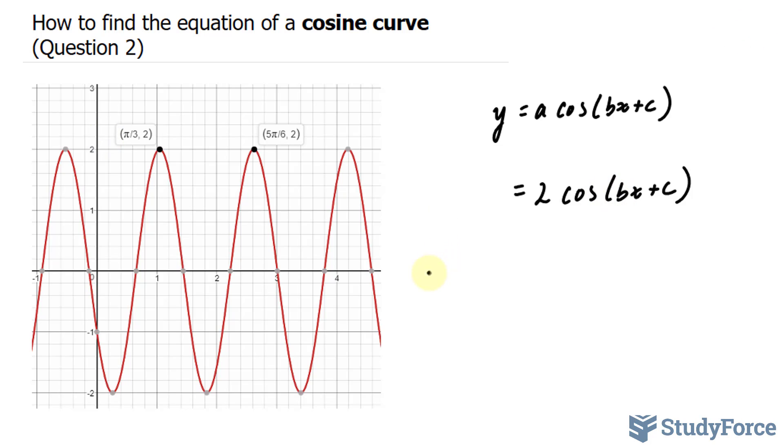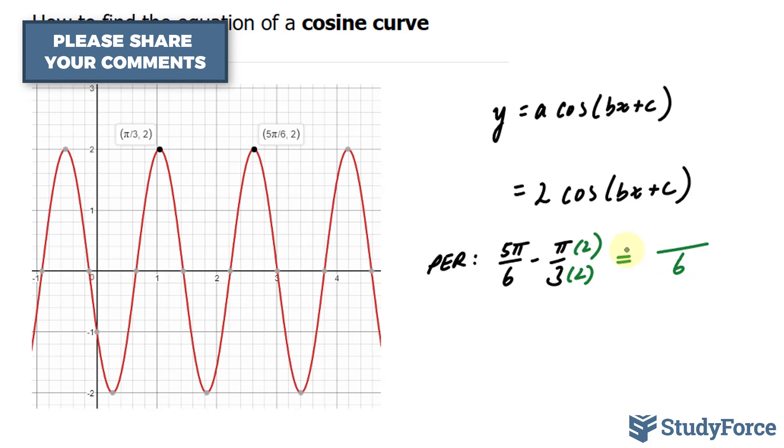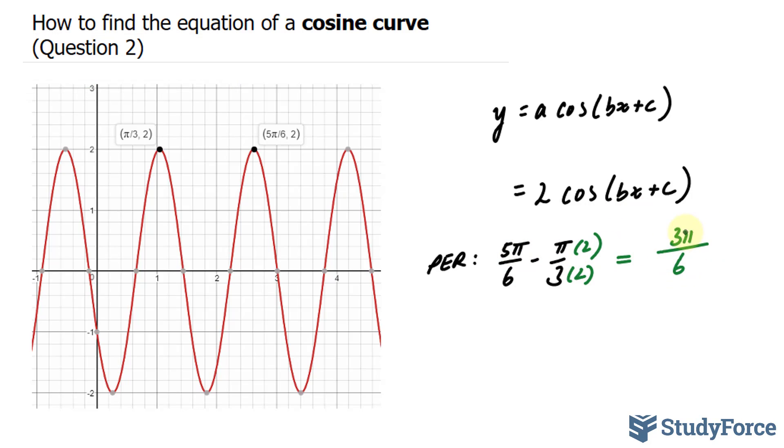Here's what I mean. Our period is the end minus the start of one cycle. So 5 pi over 6 minus pi over 3. We have to subtract this number with this number. That's not hard to do. All we need is a common denominator. Multiply this by 2 and this by 2. Now we have 6 at the bottom. And at the top, we have 2 pi. So 5 pi minus 2 pi is 3 pi. This reduces down to pi over 2. I just found my period.